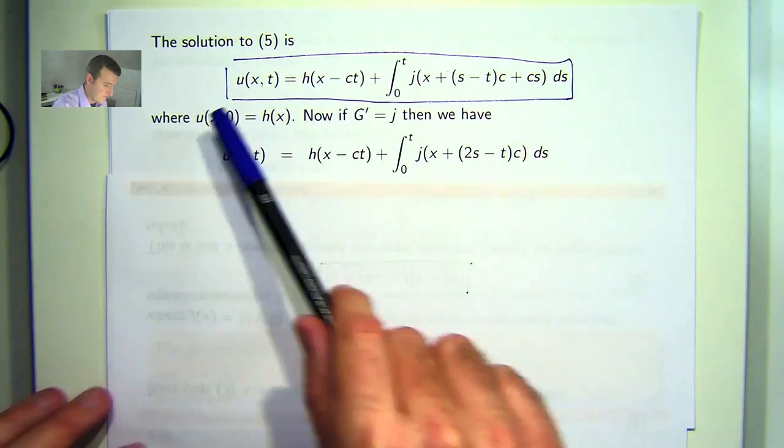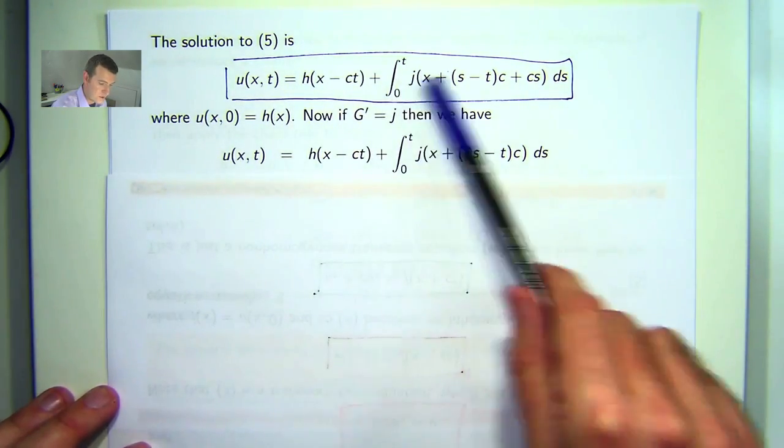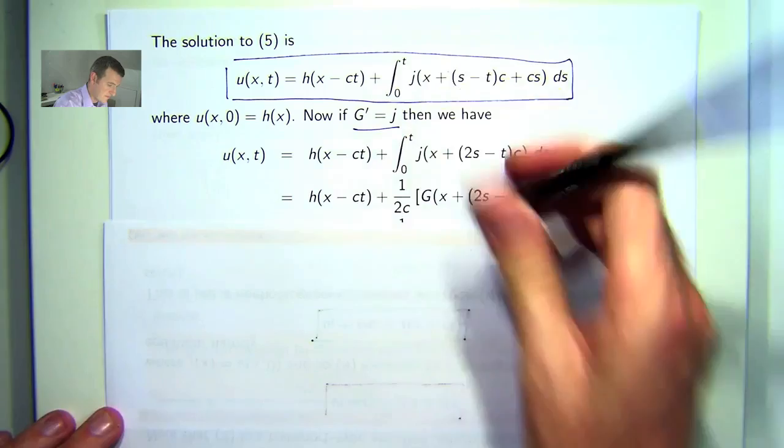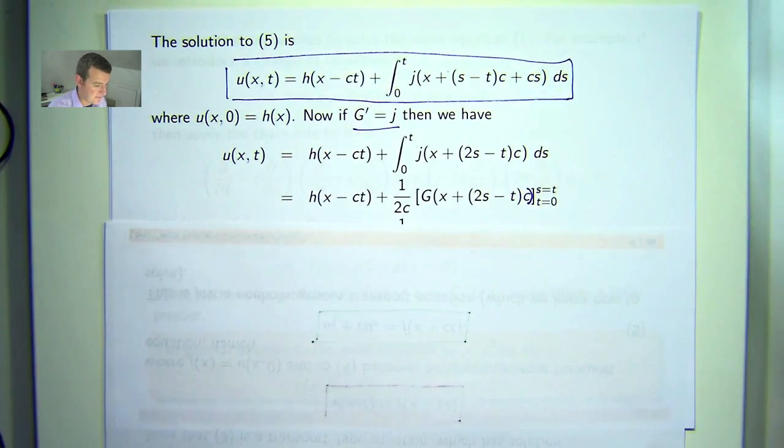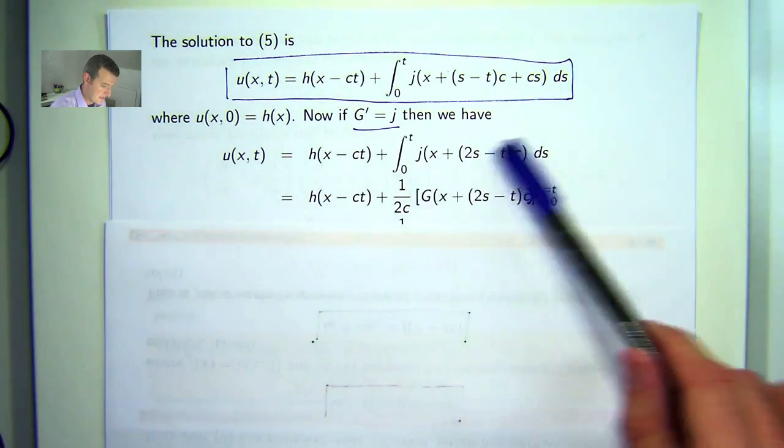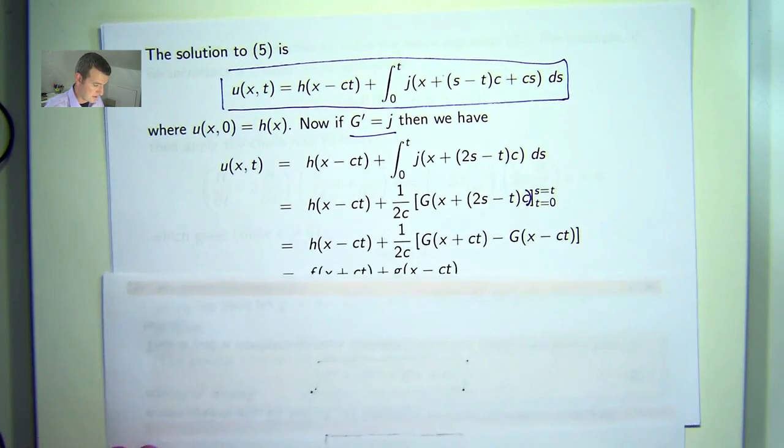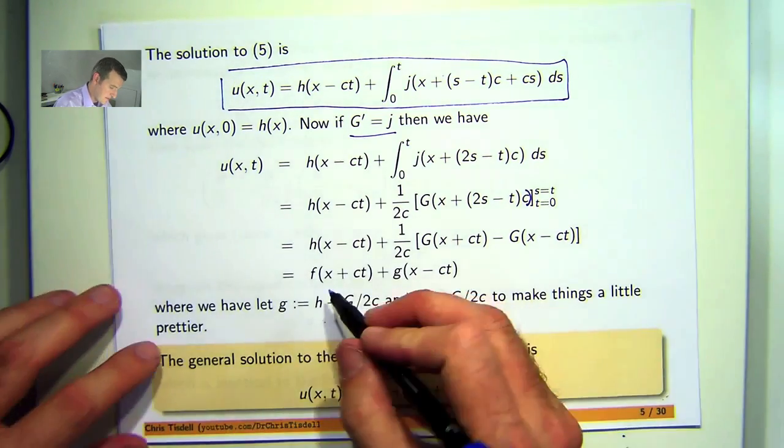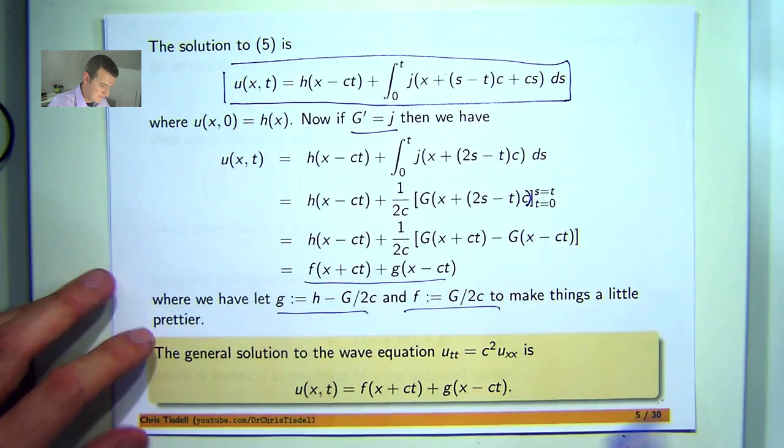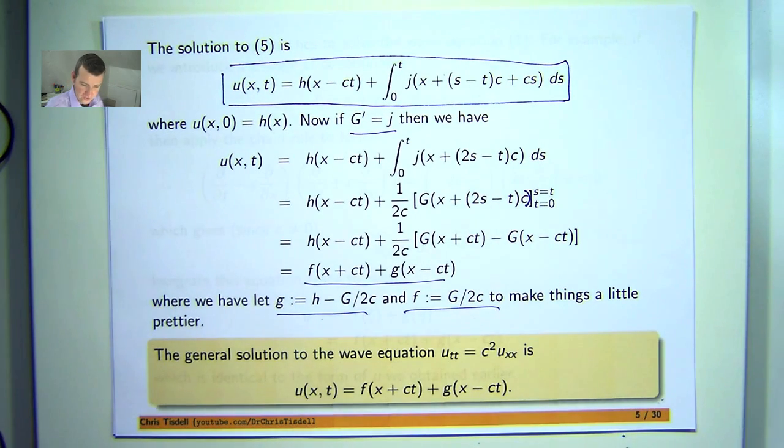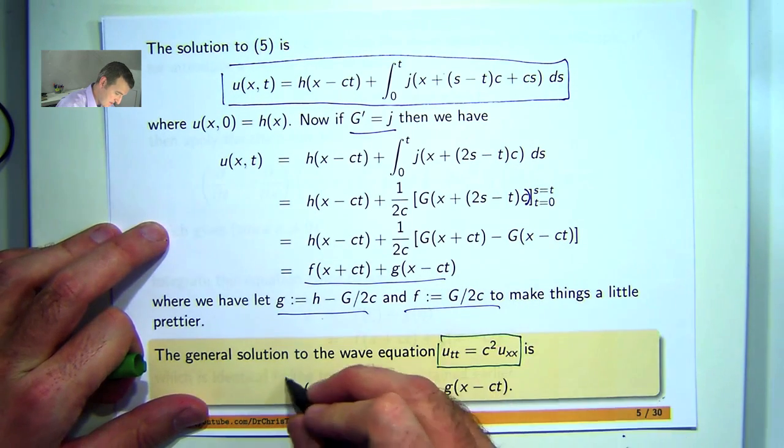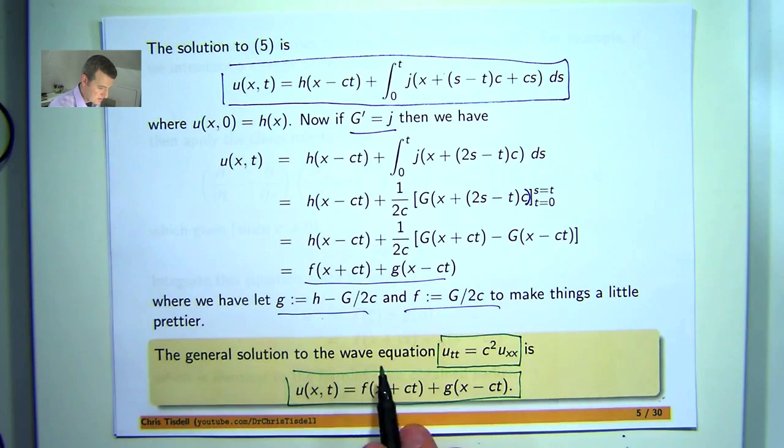Here I've used the integral equation type approach but you can get this if you use the method of characteristics. H here is an arbitrary but differentiable function such that this is true. What about this integral here where you clean up the argument a bit and then you define a new function, big G such that big G prime equals little j. Then you can do the integral like you would and you get this and then if you want to clean it up a little bit, you define F and G to be these expressions and come up with the form that we've seen already in previous videos. The general solution to the wave equation is this here.